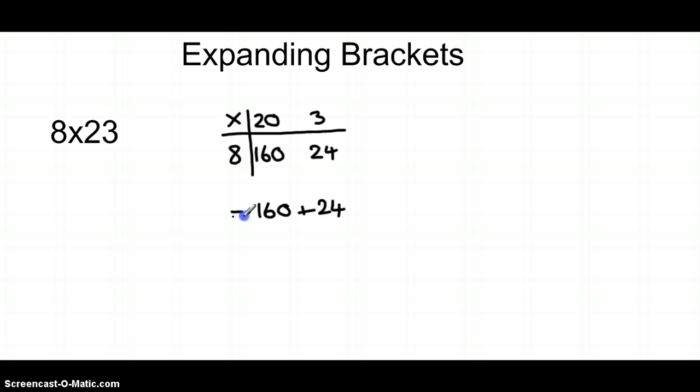Now I'm just going to write out our calculations slightly differently because what we've done is we've done 8 times 23, and I'm going to write 23 as 20 plus 3. As you can see here now, I've created a bracket with the term inside. What you'll notice is I've done 8 times 20 which is 160, and I've done 8 times 3 which is 24.